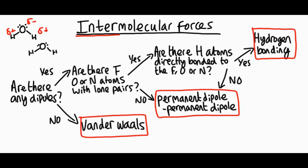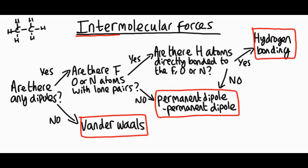Let's try ethane, which is an alkane. The carbon–hydrogen bonds are non-polar, so ethane molecules are not polar. Are there any dipoles? No. So the strongest intermolecular force holding ethane molecules together is van der Waals forces. That's why ethane has such a low boiling point — even at room temperature it's already a gas.